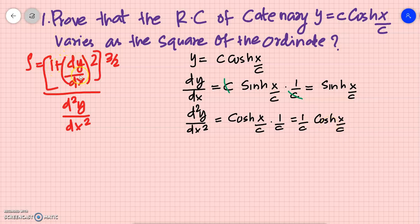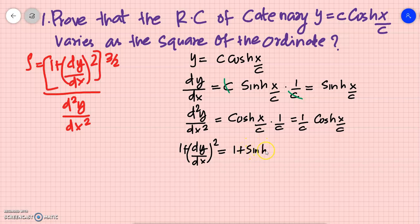Now computing 1 + (dy/dx)²: this equals 1 + sinh²(x/c), and that equals cosh²(x/c).